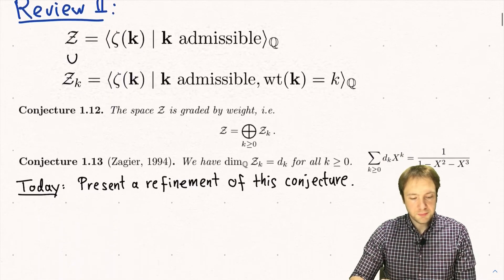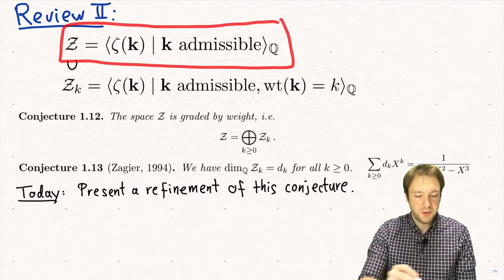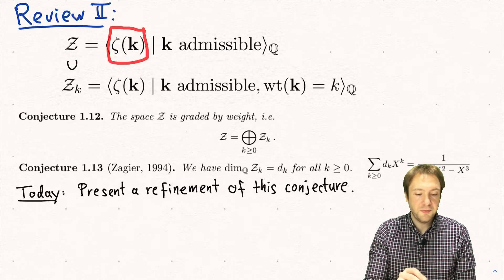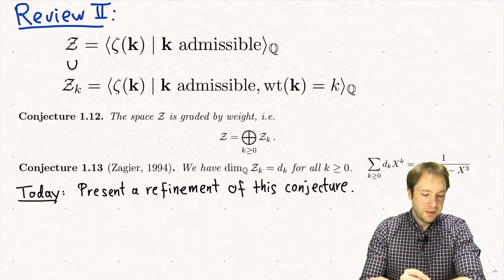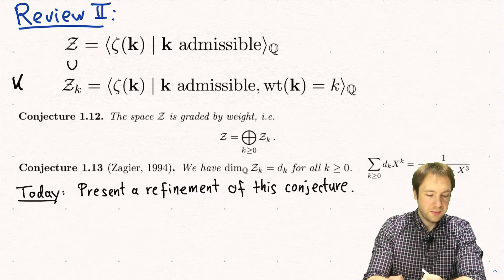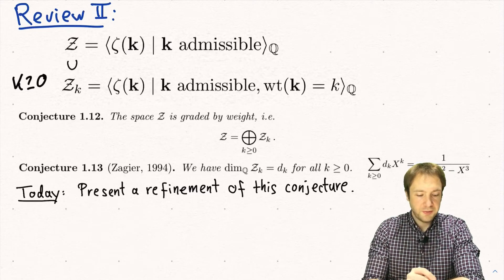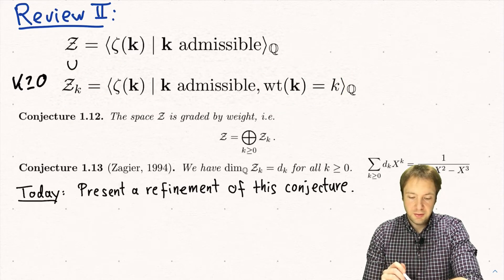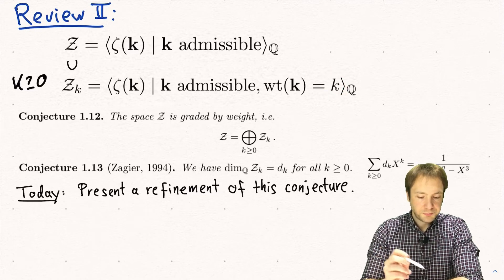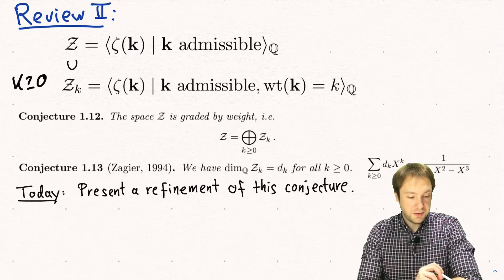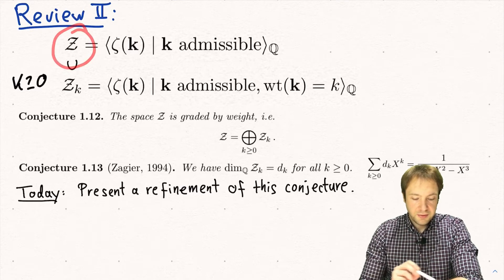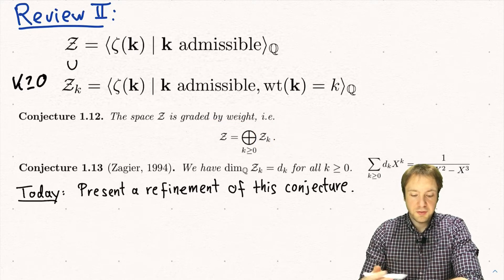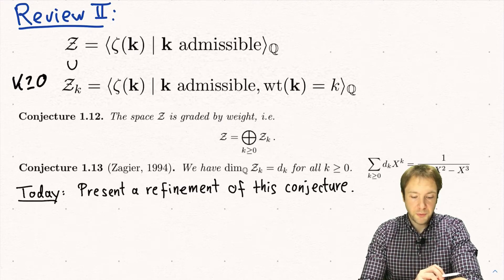Then we introduced the space of multiple zeta values, denoted by Z. This is the Q-vector space spanned by all multiple zeta values zeta(k) where k is an admissible index. For k greater or equal to zero we define the subspace Z_k spanned by all multiple zeta values where the weight of the index — meaning the sum of the k's — equals k. One of the main conjectures in this field is that the space Z is graded by weight, meaning it's a direct sum of these Z_k's, which says there are no linear relations among multiple zeta values of different weight.